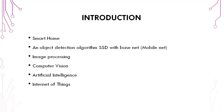Next is Computer Vision. Computer Vision is a field of computer science that works on enabling computers to identify and process images in the way that human vision does, and then provides an appropriate output. Next is Artificial Intelligence, which helps to simulate human intelligence in machines that are programmed to think and act like humans.